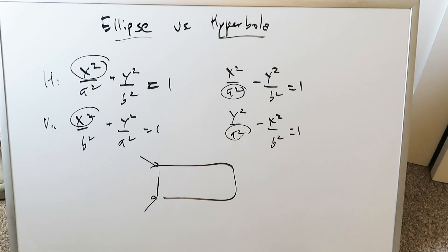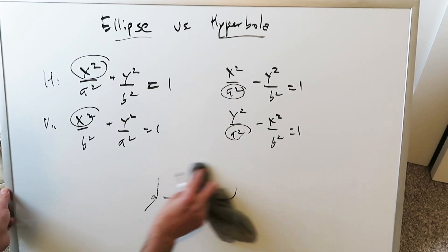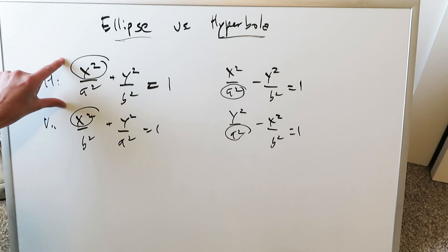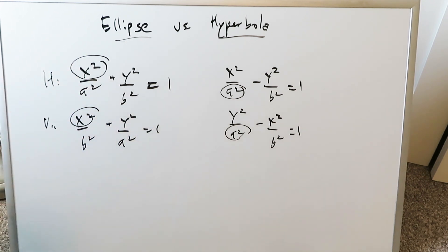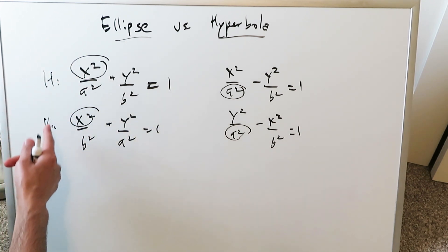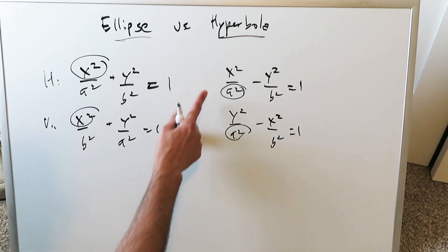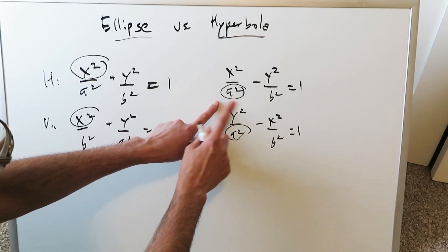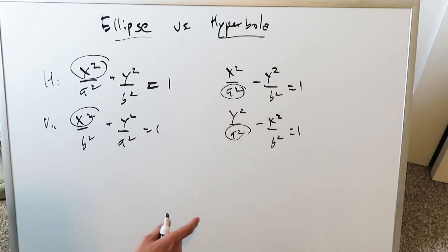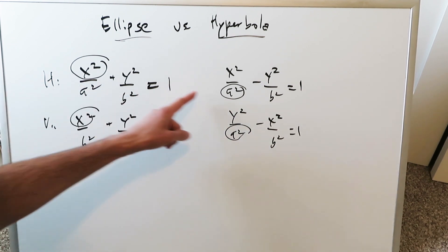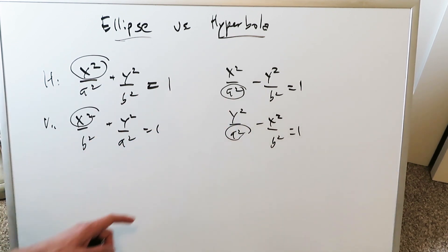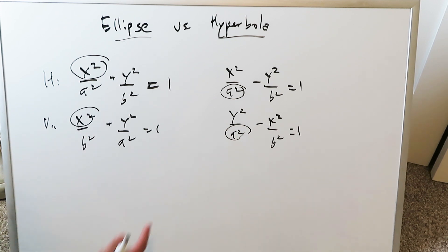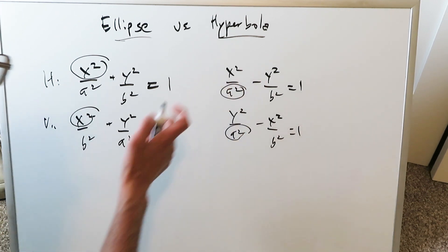For an ellipse, you are maintaining the x squared always in the top left part, and then everything adjusts accordingly — horizontal and vertical. For a hyperbola, maintain your a squared in the lower left corner and everything adjusts around that. You can see the horizontal and you can see the vertical. The ellipses have positive; the hyperbolas have negative.